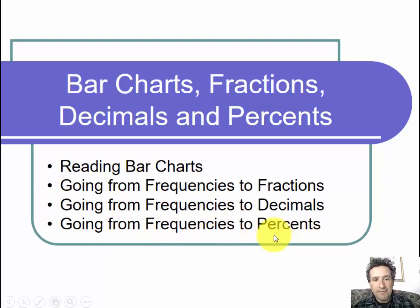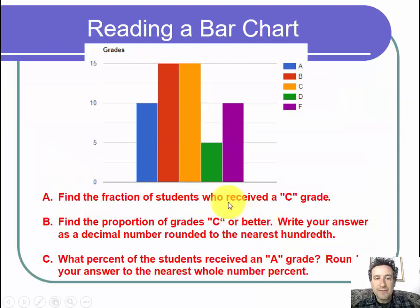Let's look at the question. We have a bar chart here which represents the grades in a class. We can see there are A's, B's, C's, D's, and F's.